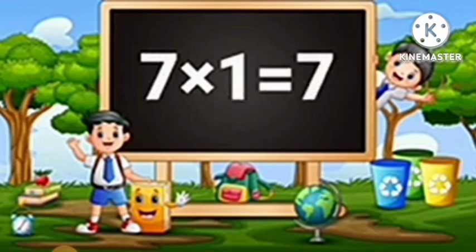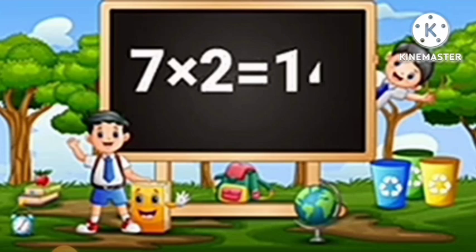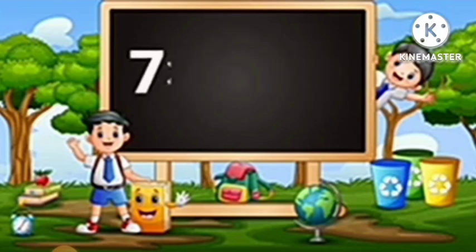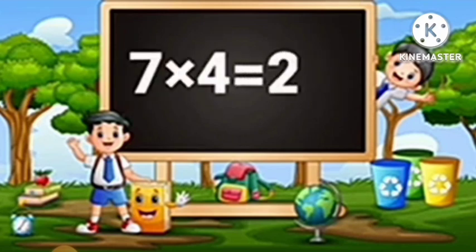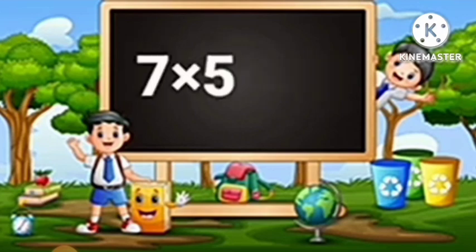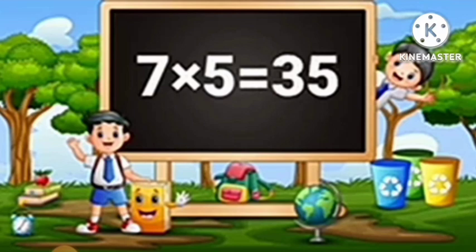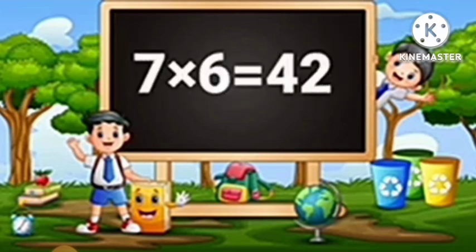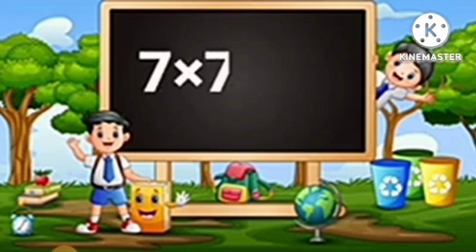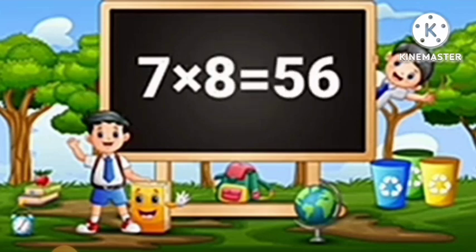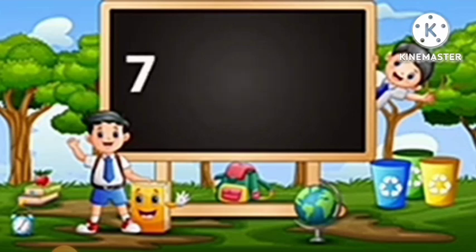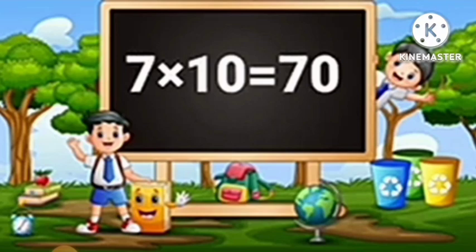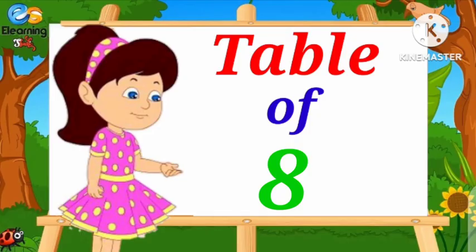Table of Seven. Seven-One's are Seven. Seven-Two's are Fourteen. Seven-Three's are Twenty-One. Seven-Four's are Twenty-Eight. Seven-Five's are Thirty-Five. Seven-Six's are Forty-Two. Seven-Seven's are Forty-Nine. Seven-Eight's are Fifty-Six. Seven-Nine's are Sixty-Three.